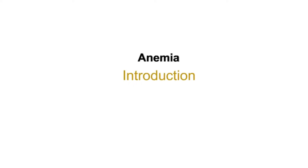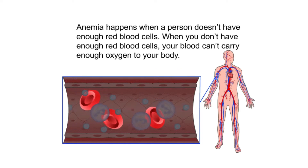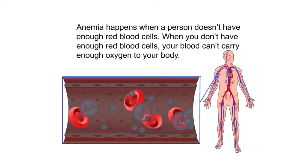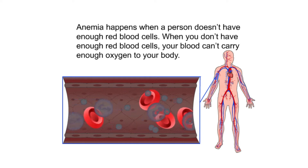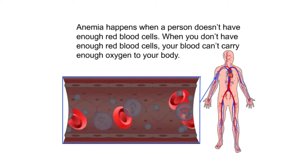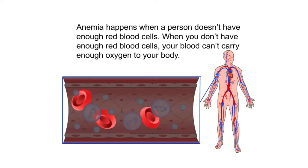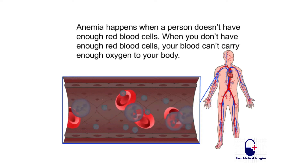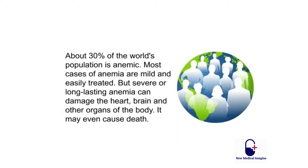Anemia happens when a person doesn't have enough red blood cells. When you don't have enough red blood cells, your blood can't carry enough oxygen to your body. About 30 percent of the world's population is anemic. Most cases of anemia are mild and easily treated.